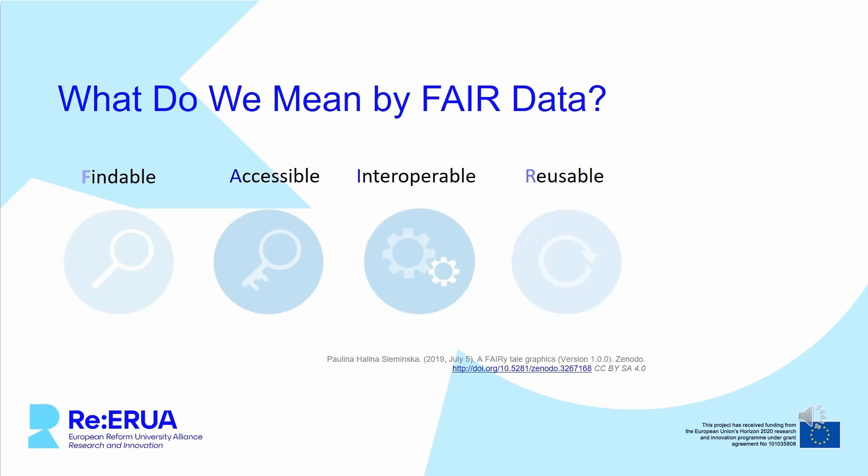What do we mean by FAIR data? FAIR is an acronym for Findable, meaning there are persistent identifiers such as DOIs or URNs. Metadata are available and stored in a searchable location. Metadata are additional information about the data such as author, year of production, and such things, so everyone can contextualize the data properly.